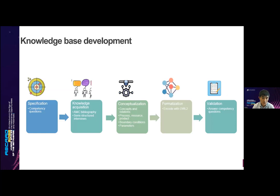The development of the ontology follows a workflow of specification, knowledge acquisition, formalization, conceptualization, and validation. As to specification, a set of competence questions are asked to clarify the scope and function of the ontology. The activities in knowledge formalization are reviewing the bibliography and conducting semi-structured interviews. The AMC processes, parameters, boundary conditions, etc. are then conceptualized in the conceptualization step. The formalization step encodes the concepts and relations using the OWL language, and the competence questions from the specification step are then answered during validation.